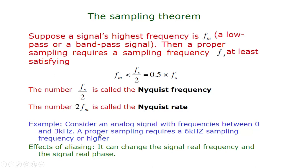Let's take an example. Consider an analog signal with frequencies between 0 and 3 kilohertz. That means the maximum frequency component present in the signal is 3 kilohertz. Therefore, proper sampling requires at least 6 kilohertz of sampling frequency or higher.